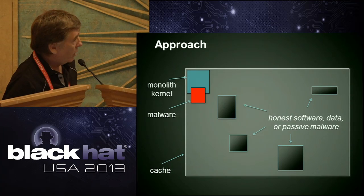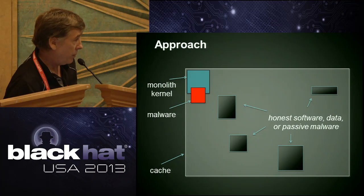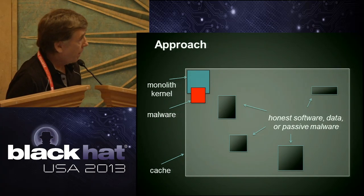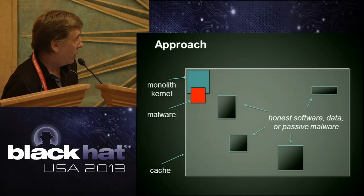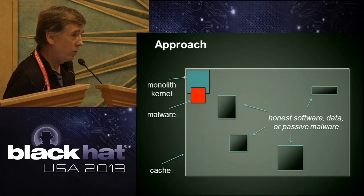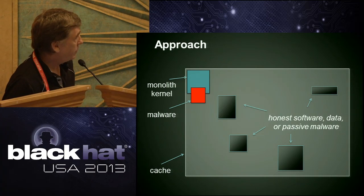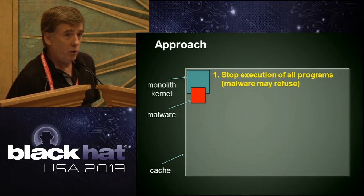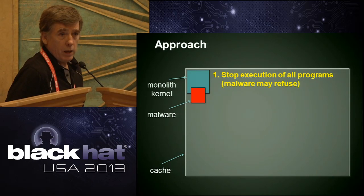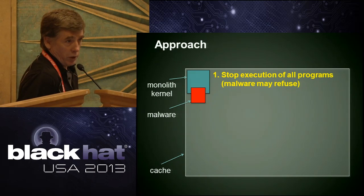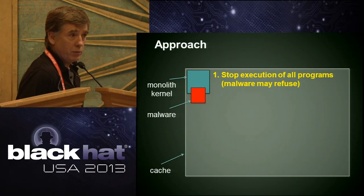The large gray box represents the faster memory — in this case, cache memory. The black boxes inside represent honest software data or passive malware. The blue box is our microkernel and the red box is malware. The malware overlaps our kernel, which we use to indicate that our kernel itself might be compromised — but we detect that if it occurs. Our first step is to stop execution of all software, including passive malware and passive rootkits. We do that by turning off interrupts, ejecting from cache or main memory by flushing the cache and flushing the page tables, depending on what level we're doing the attestation at. At this point, the only thing that should be in memory is our microkernel.